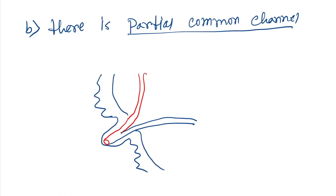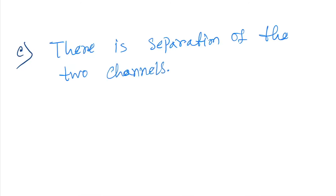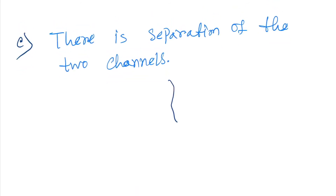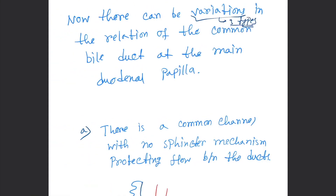Type C variation is where there is complete separation of the two channels. The common bile duct forms a separate opening and the pancreatic duct forms a completely separate opening. So this is the complete separation of two channels.